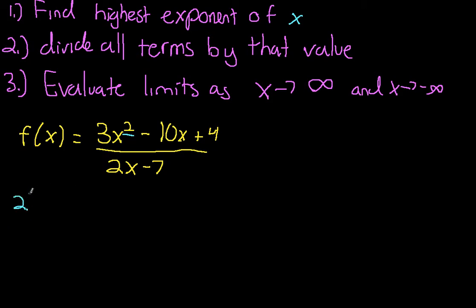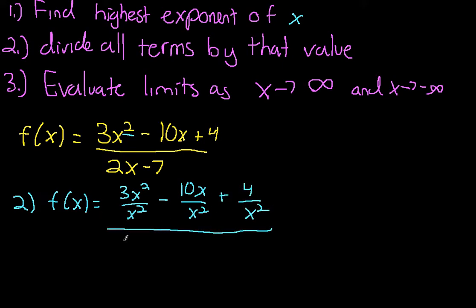Step 2, divide every term by this value. So we could say f of x equals 3x squared over x squared minus 10x over x squared plus 4 over x squared, all divided by 2x over x squared minus 7 over x squared.